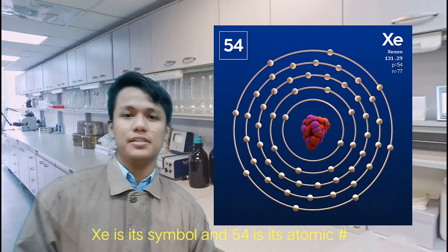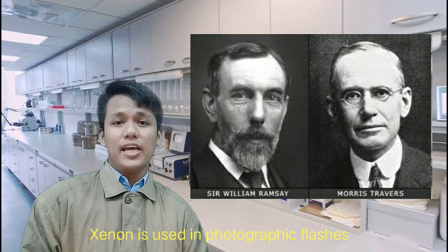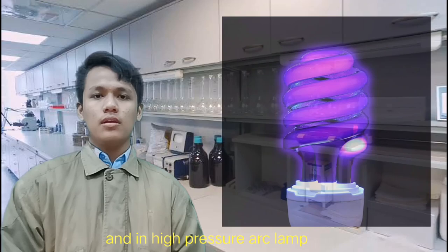Now I'm going to introduce xenon. Xe is its symbol and 54 is its atomic number. Once again, it's William Ramsay and Morris William Travers who discovered this element. Xe is used in photographic flashes, in high-pressure arc lamps for motion picture projection, and in high-pressure arc lamps to produce ultraviolet light.